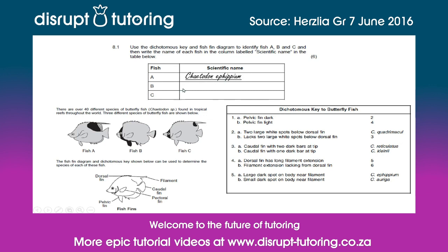So we therefore know that the scientific name for Fish A is Chaetodon ephippium. Notice that it's written underlined — we'll explain why in a little bit. Now let's go on to identify what Fish B is. Fish B has a dark spot on its face that runs all the way down to the pelvic fin.